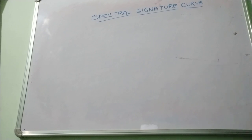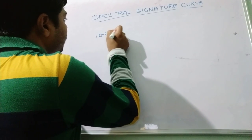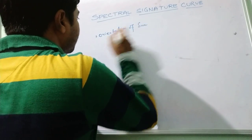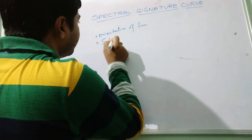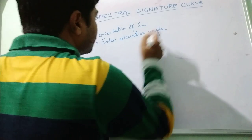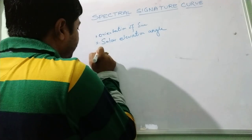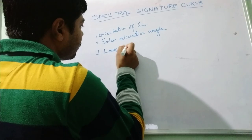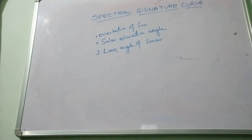Each object has some different spectral response that depends on several factors: the orientation of the sensor, the solar elevation angle, the look angle of the sensor, and the topographic position.